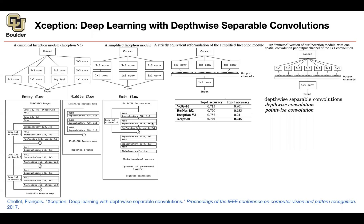This is how Xception works — and Xception stands for Extreme Inception. This is how Xception compares to Inception V3, ResNet, and VGG. When you give it the same amount of capacity, or similar capacity in terms of parameter count, Xception is doing better in terms of accuracy, both top-1 and top-5.